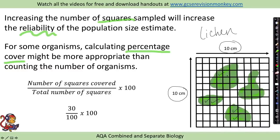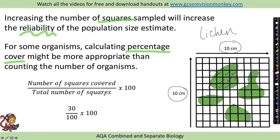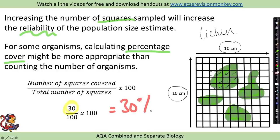You count up all the whole squares covered, then look at any partial squares — where two partial squares could fit together roughly to make a complete square — and continue estimating the total number of squares covered by the lichen. The equation is: number of squares covered divided by the total number of squares, multiplied by 100, to give percentage cover. For example, if 30 squares in total are covered and there are 100 squares on the grid, then 30 ÷ 100 × 100 = 30% coverage.